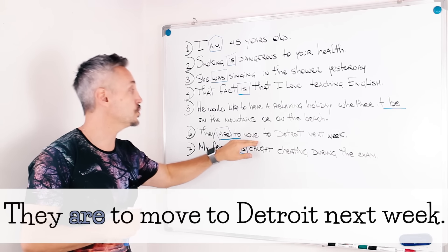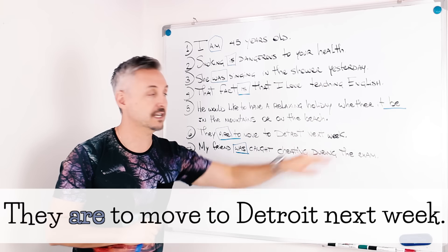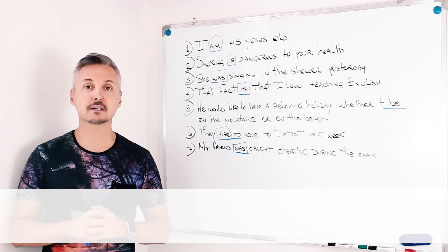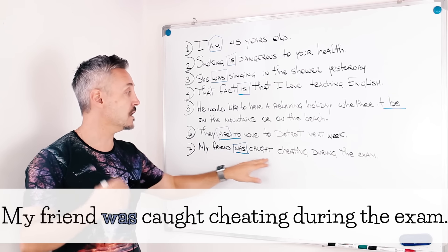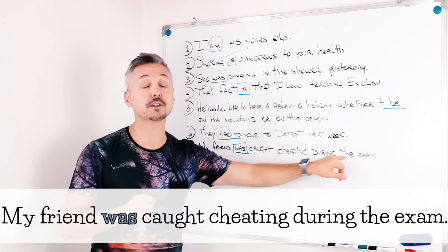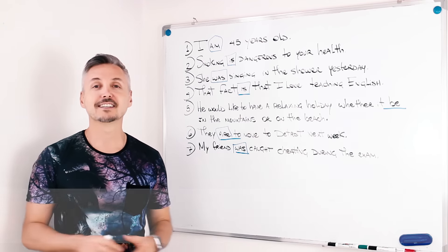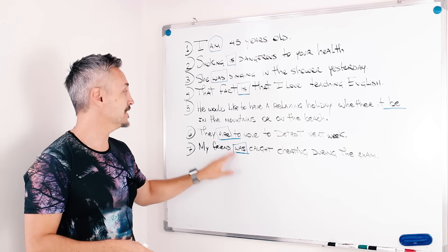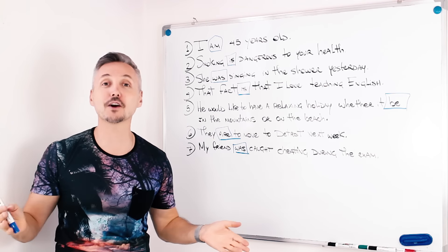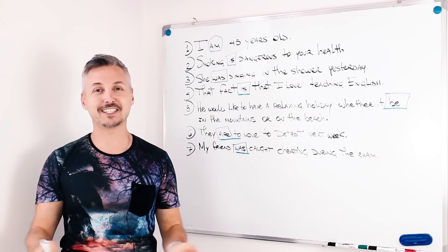They are to move to Detroit next week. Number seven. My friend was caught cheating during the exam. In this lesson, we're going to talk about the verb to be. So stay tuned.